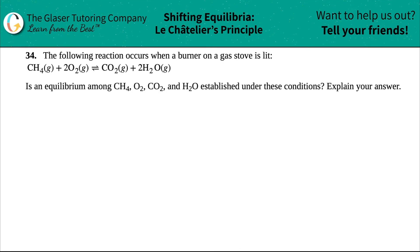Number 34. The following reaction occurs when a burner on a gas stove is lit, and then we have this balanced equation. So it looks like we're burning methane - methane is CH4, so this is a combustion reaction.